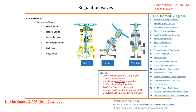Regulation valves covered in this section include globe, needle, butterfly, diaphragm, ball, and plug valves — the commonly used regulation valves in the piping industry. For each type, we'll discuss its body of construction, function, performance, various uses, and advantages and disadvantages, starting with the globe valve.